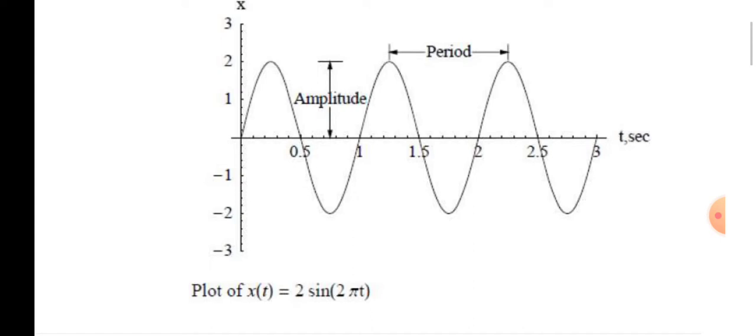What kind of period? The time required to complete one oscillation is called the time period. Now, plot x of t equals 2 sine 2 pi t.